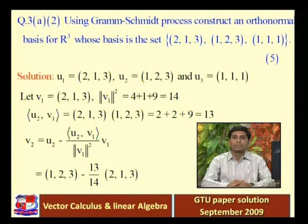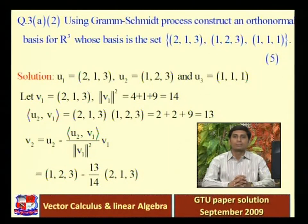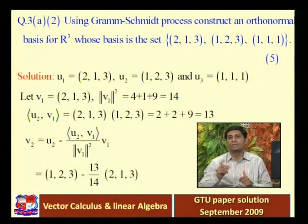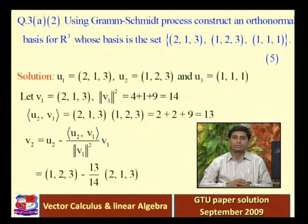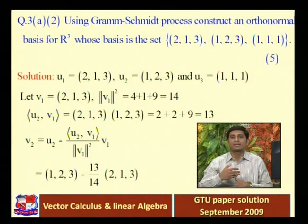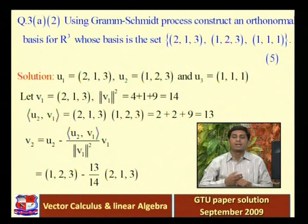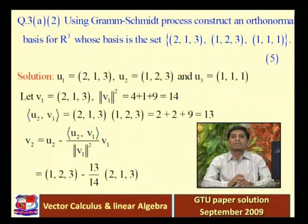Orthonormal means the set is orthogonal — so the dot product of any two vectors equals zero — but additionally, the norm of each and every vector must equal 1. First we convert the three basis vectors into orthogonal basis vectors, and then we convert those orthogonal basis vectors into orthonormal basis vectors by dividing each by its norm.